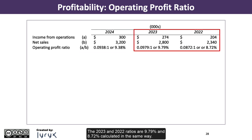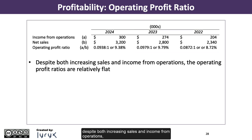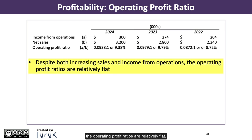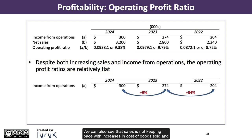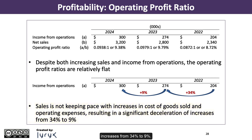The 2023 and 2022 ratios are 9.79% and 8.72%, calculated in the same way. We can conclude from the ratios that, despite both increasing sales and income from operations, the operating profit ratios are relatively flat. We can also see that sales is not keeping pace with increases in cost of goods sold and operating expenses, resulting in a significant deceleration of increases from 34% to 9%.